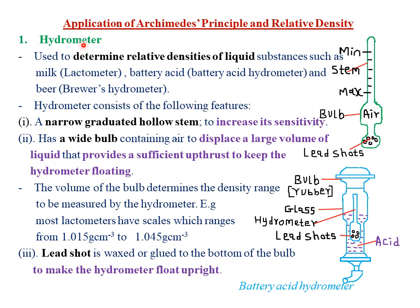The hydrometer used to find the relative density of battery acid is called a battery acid hydrometer. The hydrometer used to determine the relative density of beer is called a brewer's hydrometer.